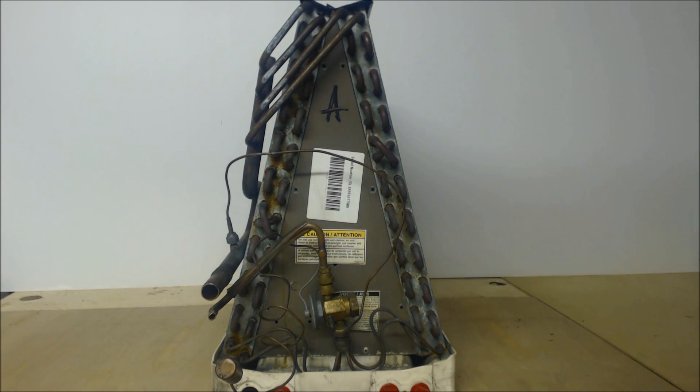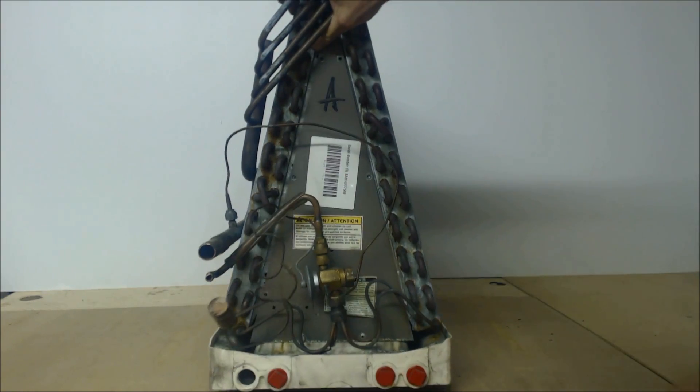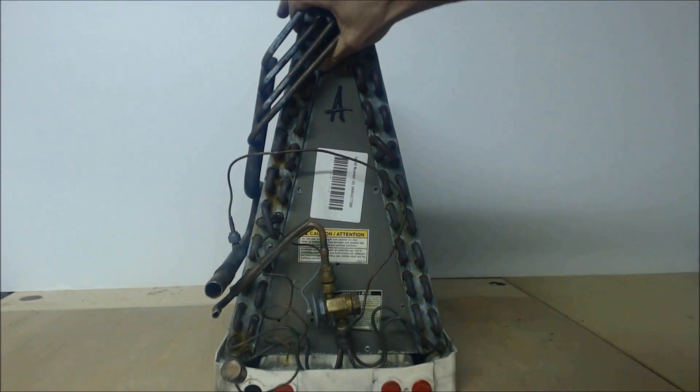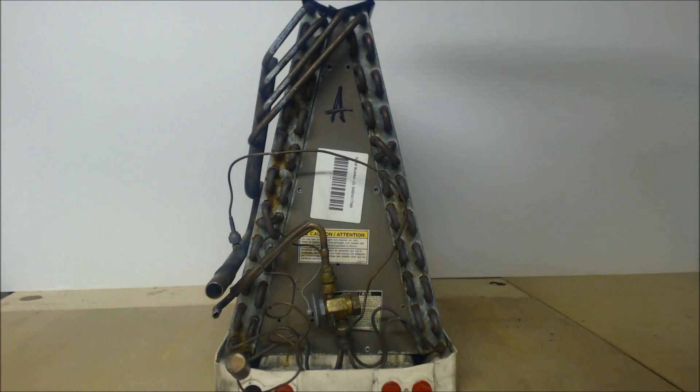Hey guys, this is the AC Service Tech. Today I wanted to go over how an evaporator coil functions. This is a vertical evaporator coil - air blows in the bottom and comes out through the sides and top, or it can be used as a downflow where air comes down through the coil.